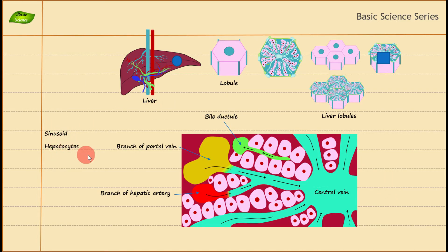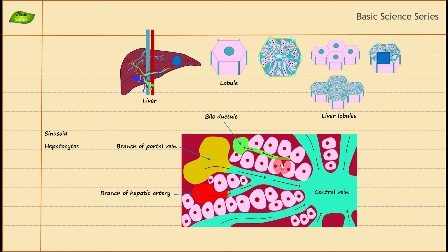Before discussing the sinusoids and hepatocytes, let me note that liver lobules are also known as hepatic lobules—they are the smaller divisions or units of the liver, also known as the building block of liver tissue. The bile ductile is a small bile duct whose function is to carry bile. The hepatic portal system is the venous system that carries blood and delivers it to the liver for processing. The hepatic artery comes from the abdominal aorta.